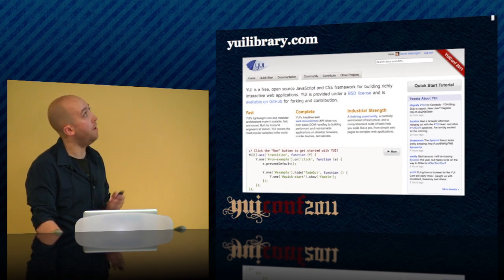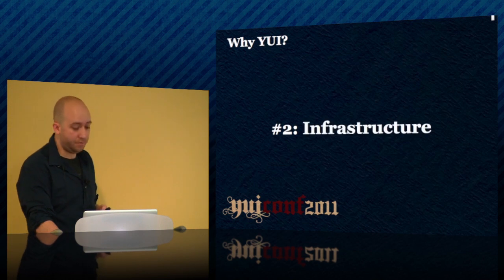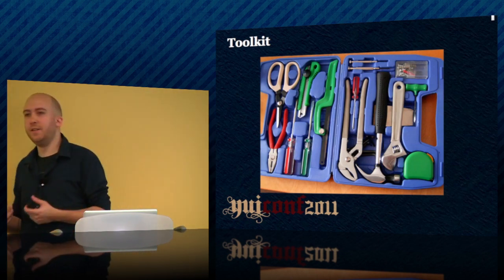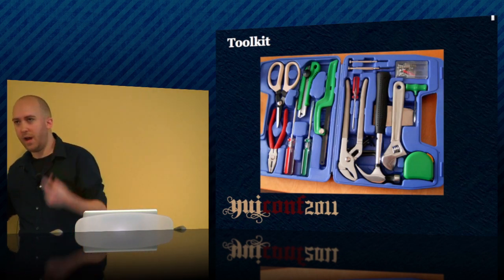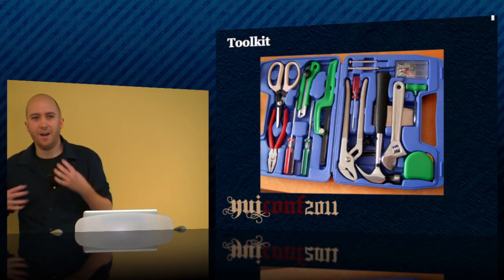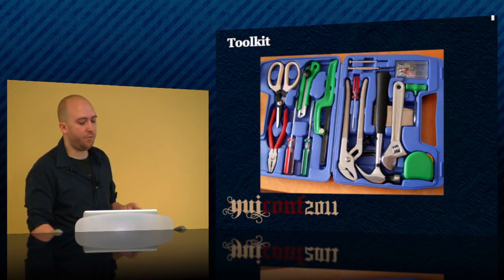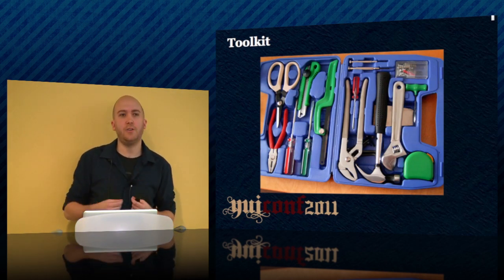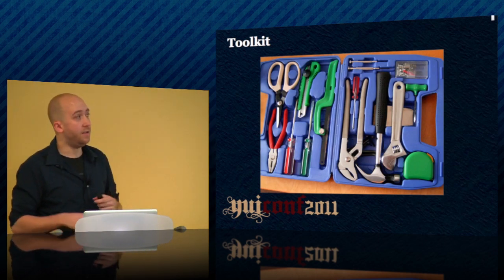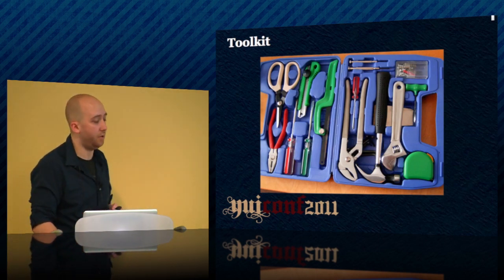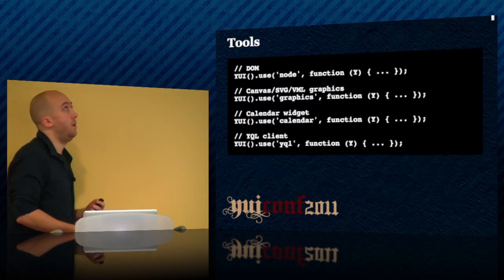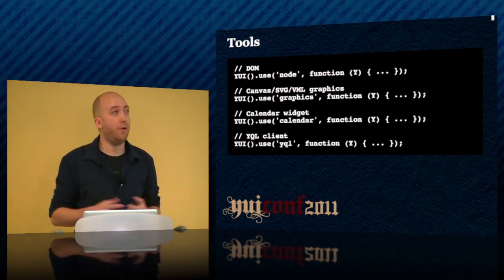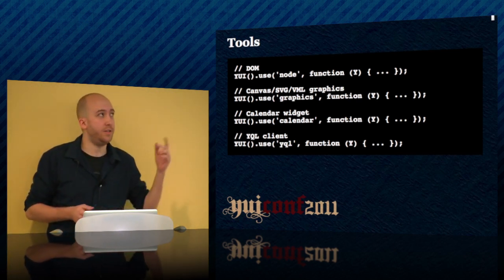This brings me to why number two: infrastructure. YUI is called a library, but I honestly view it more as a toolkit. The terms library, toolkit, and framework are often used interchangeably, but I say toolkit because that most accurately describes what YUI is and how it allows you to pick and choose the various tools you need — and you can use them mostly independent of each other. If you just want a DOM selector, use YUI node. Canvas, SVG, VML graphics layer — just include graphics. Calendar widget — calendar. YQL client — just include YQL.